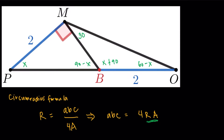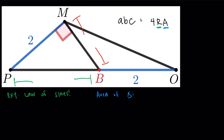I decided to think about how to express the circumradius and the area of the triangle in terms of trigonometric functions. For the area, there's a nice trigonometric form. For the circumradius, we can use the extended law of sines, which we've talked about on the channel before. I decided to use PO with the extended law of sines, since the only known angle is the 120 degrees. PO divided by sine 120 degrees gives twice the circumradius.